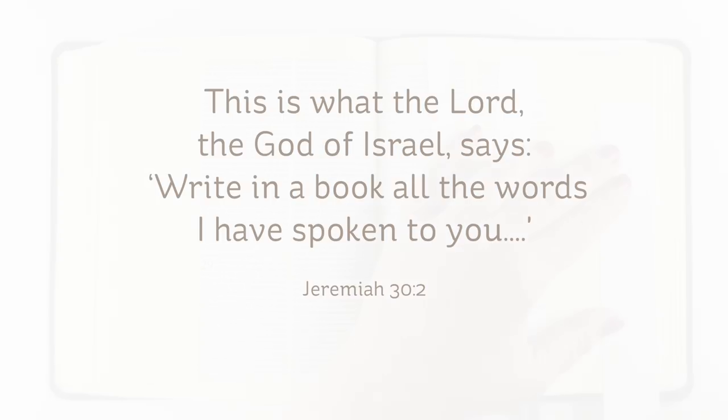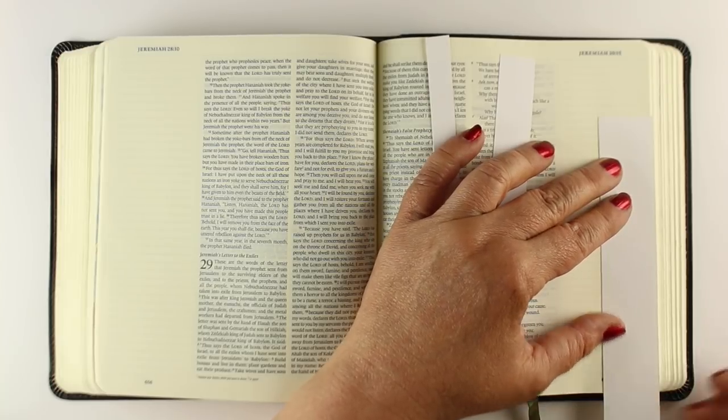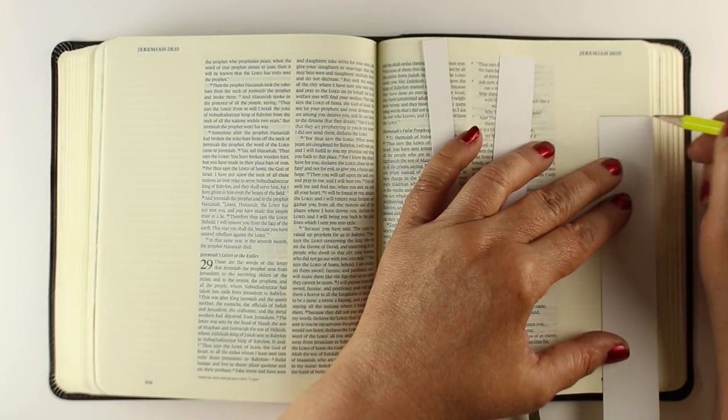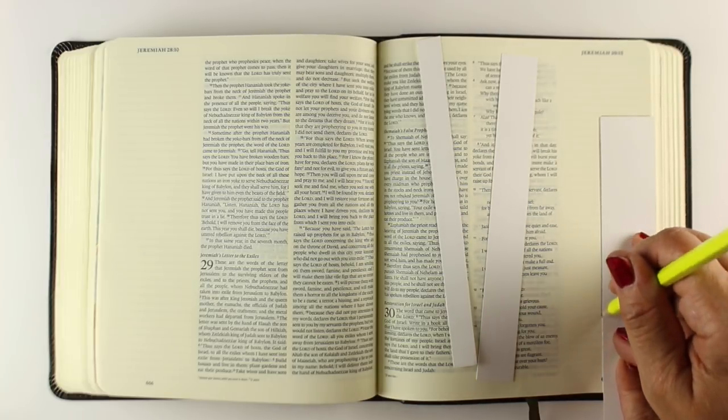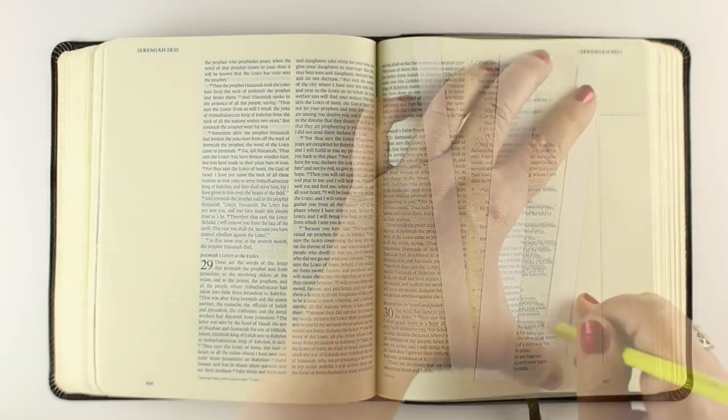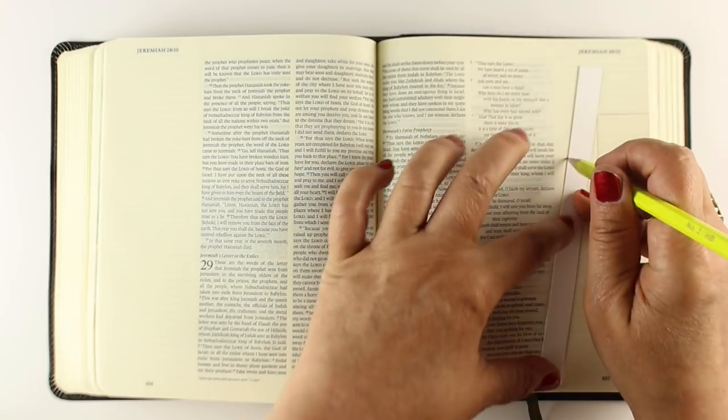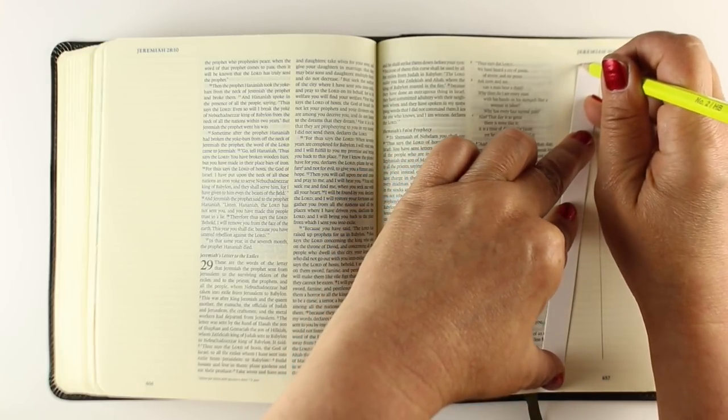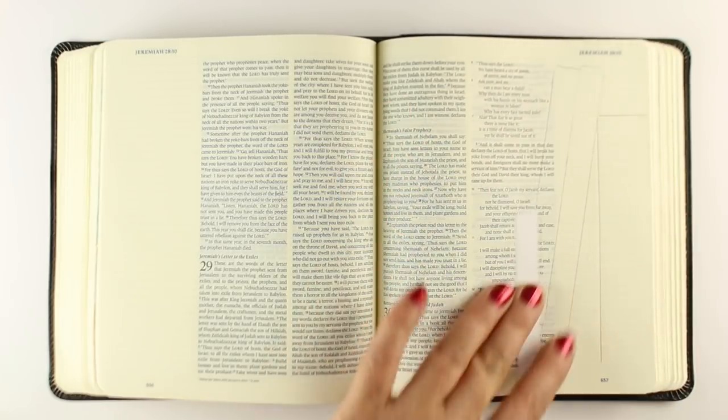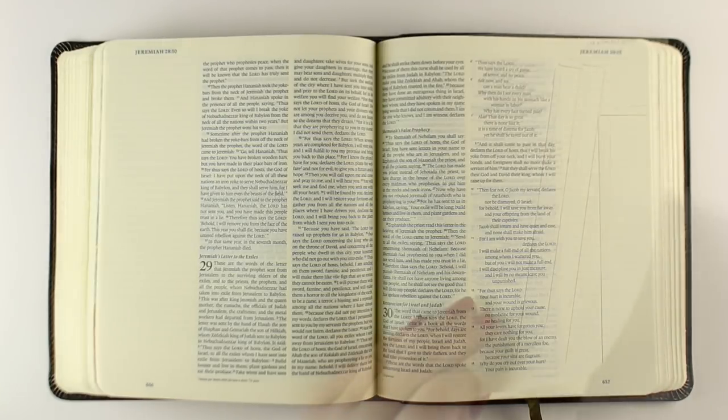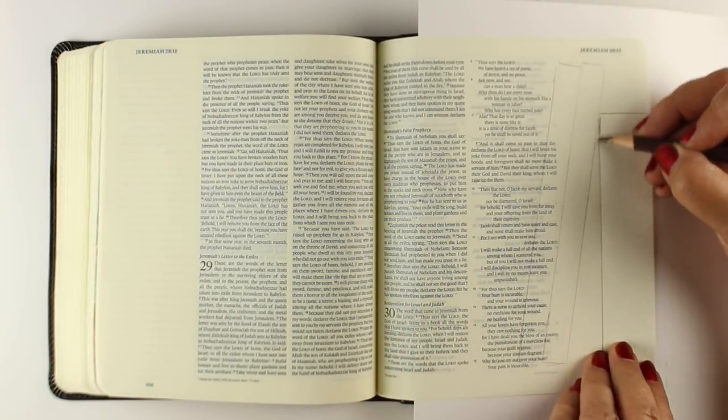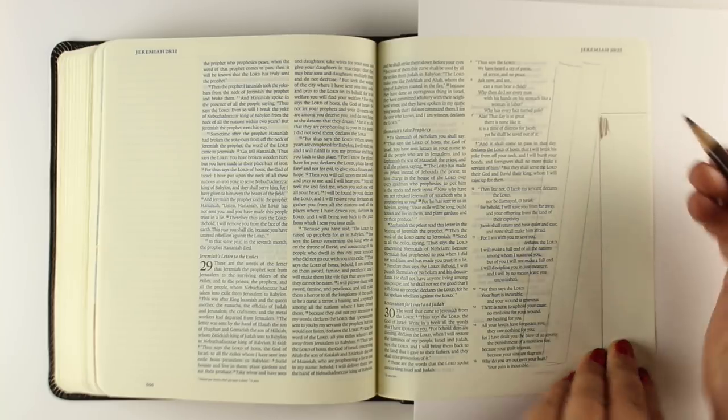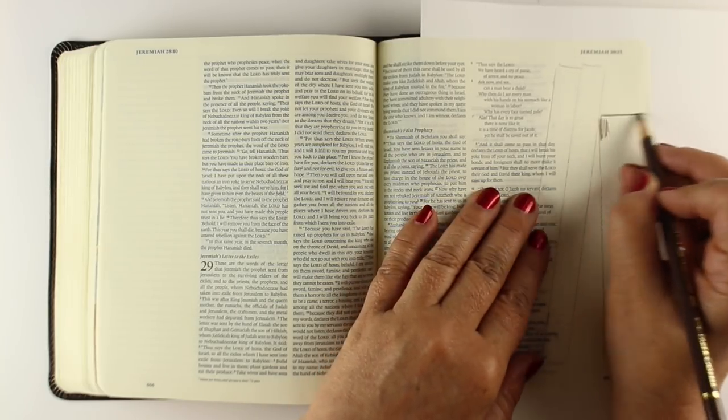The context here is God was talking to the Israelites in captivity and saying, write it down, people, so you don't forget. And is that not what Bible journaling does for us? At least it does for me. It helps me to remember when I write it and draw it and put some color to it, and then I remember things a whole lot better. And my mind is like a sieve, and I need to do all I can to keep from losing things that God has said to me.